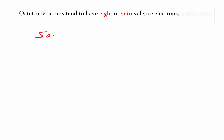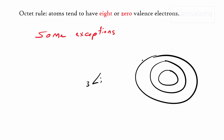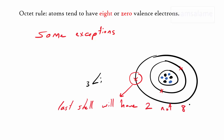Now let's talk about some exceptions to the octet rule. Not all elements have 8 valence electrons. For example, lithium has only 3 electrons and 1 valence shell electron. If it loses that electron, it will have 2 in the outer shell, not 8, and it's going to be stable by having only 2. This is called the duet rule, and it also applies to elements like hydrogen and helium. So elements like hydrogen, lithium, and helium can be stable by having only 2 electrons in their outer shell.